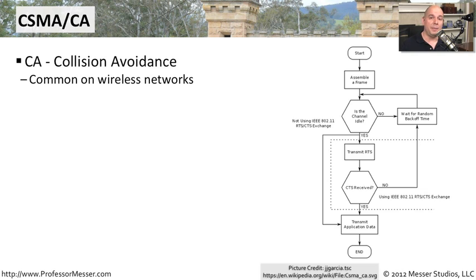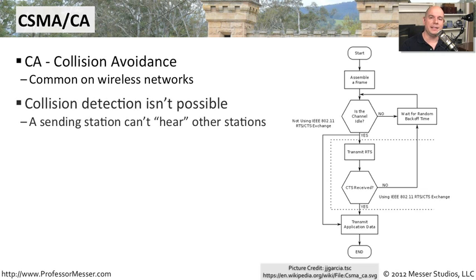We see this most commonly on wireless networks, because there's no way for a wireless device to hear if two stations are communicating at the same time. A radio transmitter will overload its own receiver — it can't hear anything except itself when sending traffic. So you can't have collision detection on a wireless network; you have to plan to avoid a collision from ever occurring in the first place.